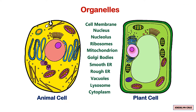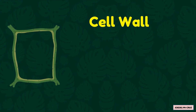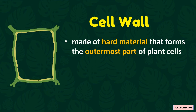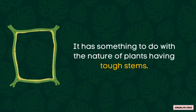The organelles present only in plant cells are the cell wall and the chloroplast. Plant cells have an added covering called the cell wall. The cell wall is made of a hard material that forms the outermost part of plant cells. It provides support, protection, and a rectangular shape to the cell. It has something to do with the nature of plants having tough stems.